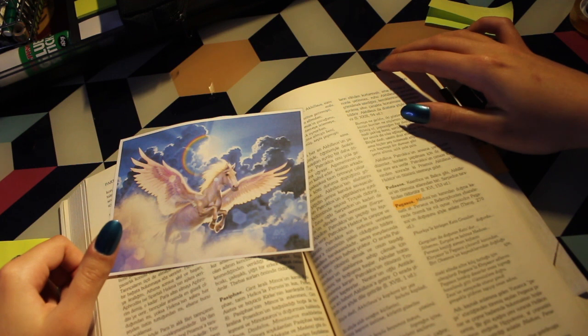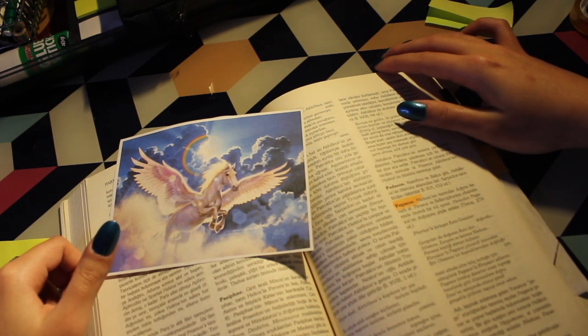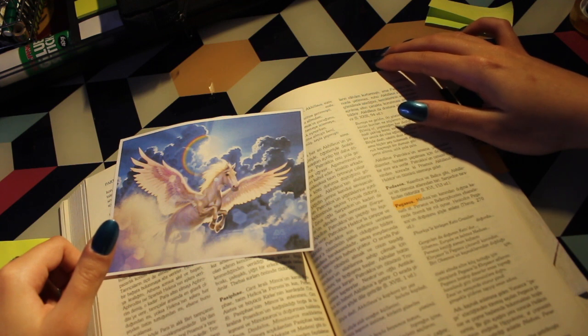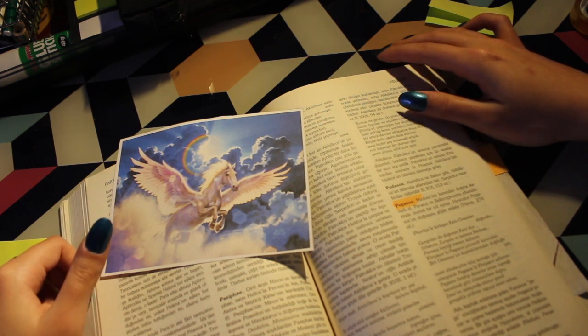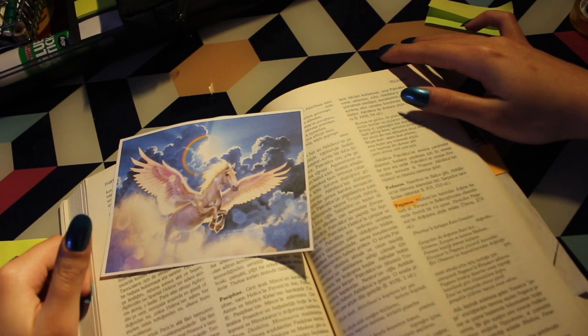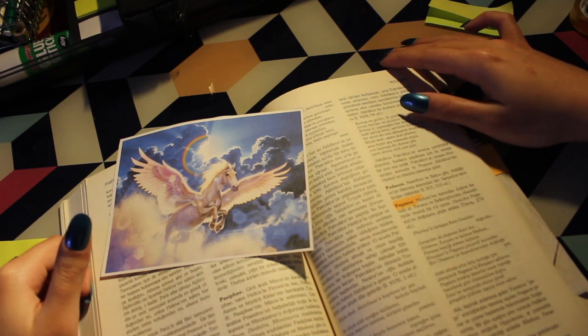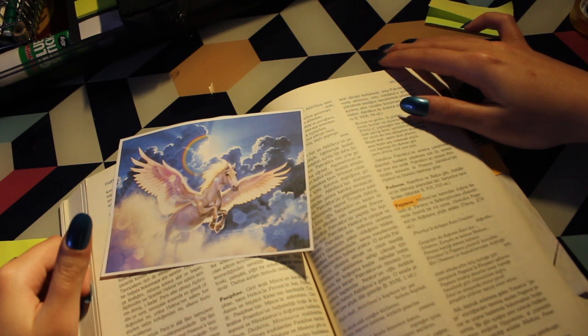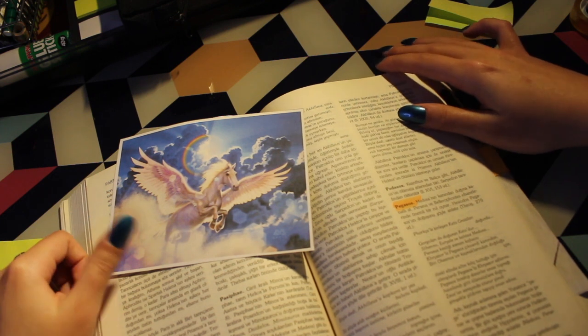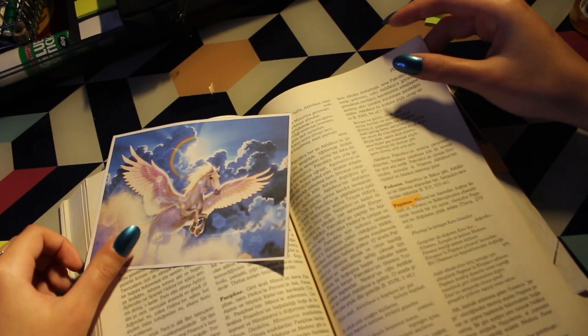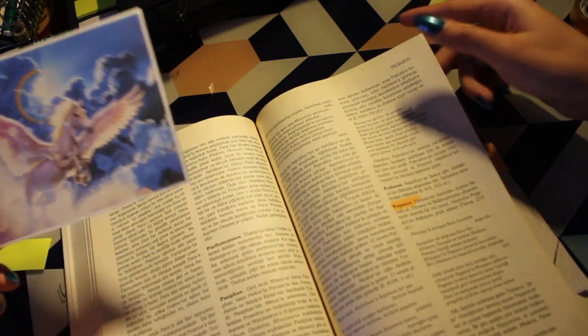Pegasus, whose name is derived from the Greek word pege meaning spring, was said to enjoy being near fountains and springs. One day, by striking his hoof on the ground, he created the Hippocrene, the horse fountain, at the foot of Mount Helicon. Pegasus was made into a constellation in the sky.